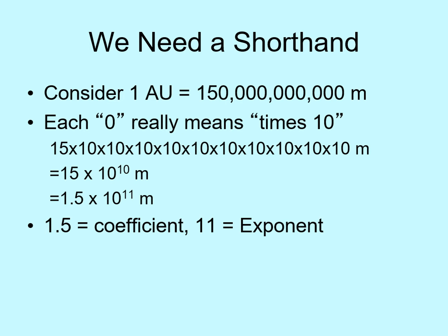Now we can take this same idea and apply it to the sun's mass — that 2 followed by 30 zeros. Go back and have a look at that number and see if you can write it out in exponential form. When you've got it, click forward and I'll give you the answer. The mass of the sun is 2 times 10 to the 30th kilograms. Did you get it, and did you remember to include the units?